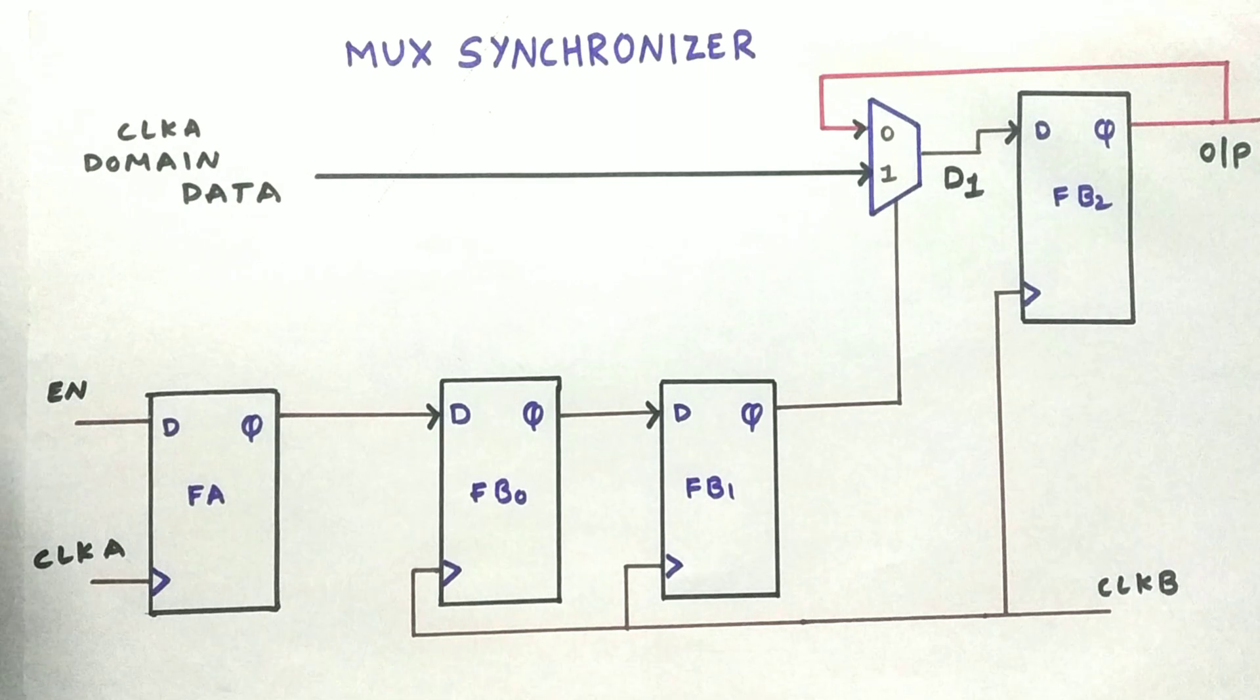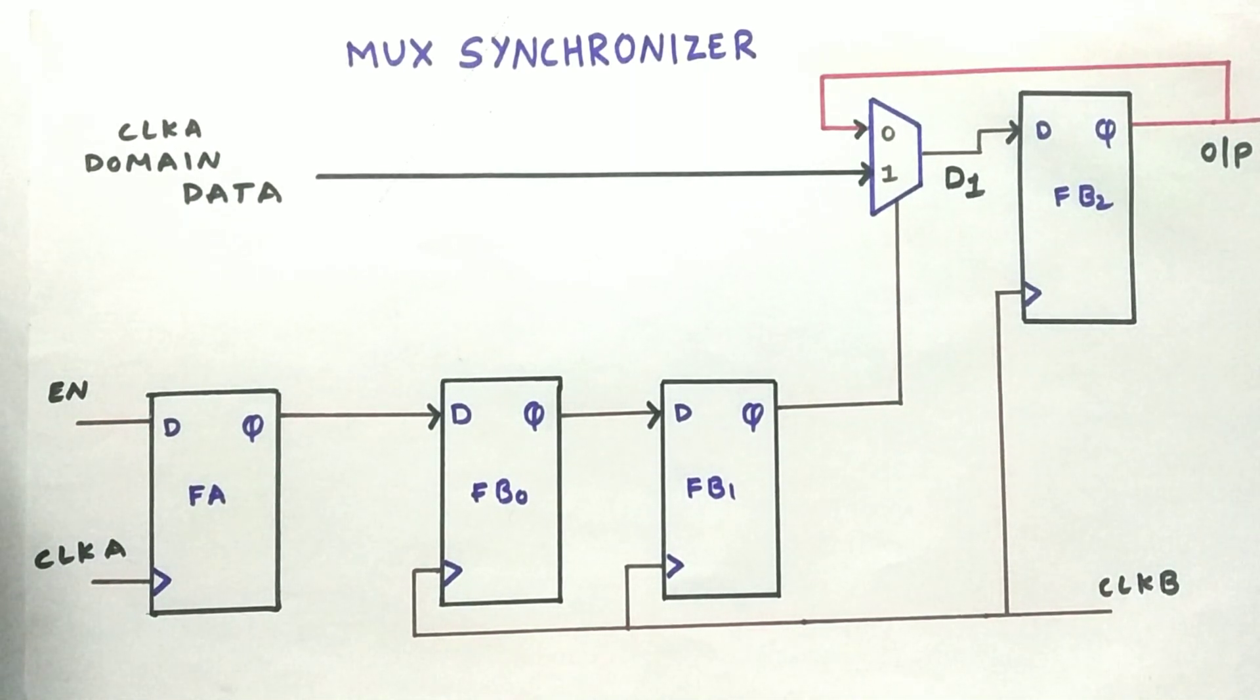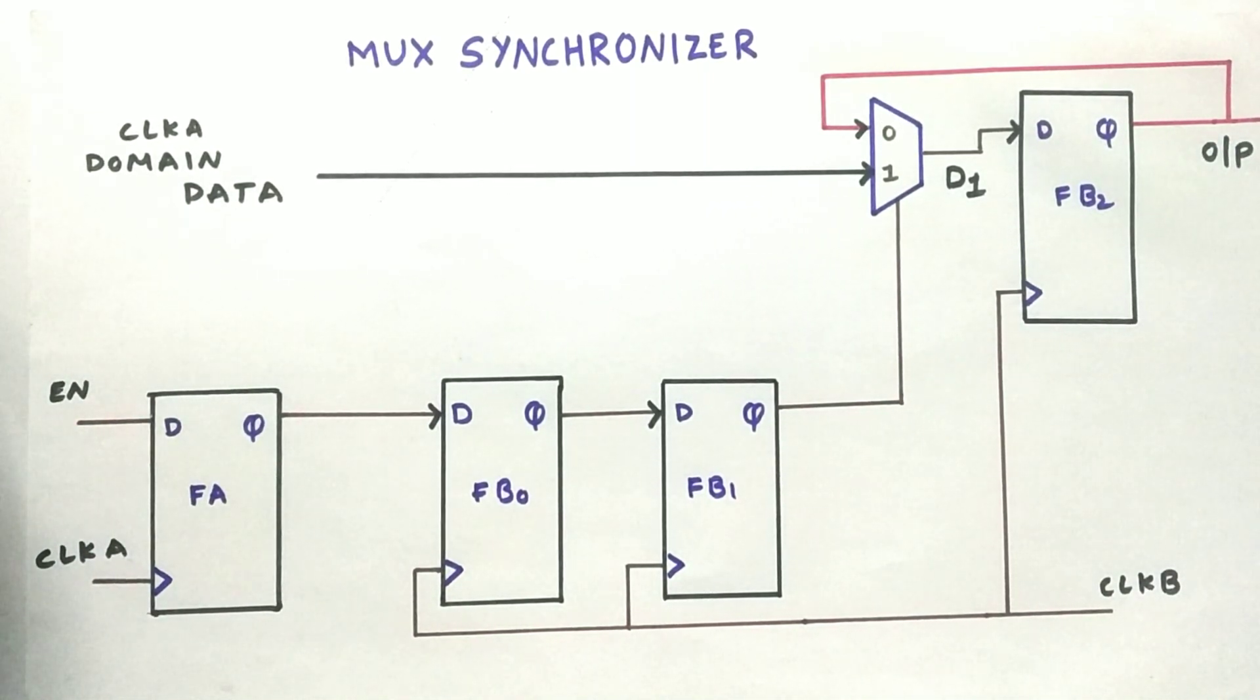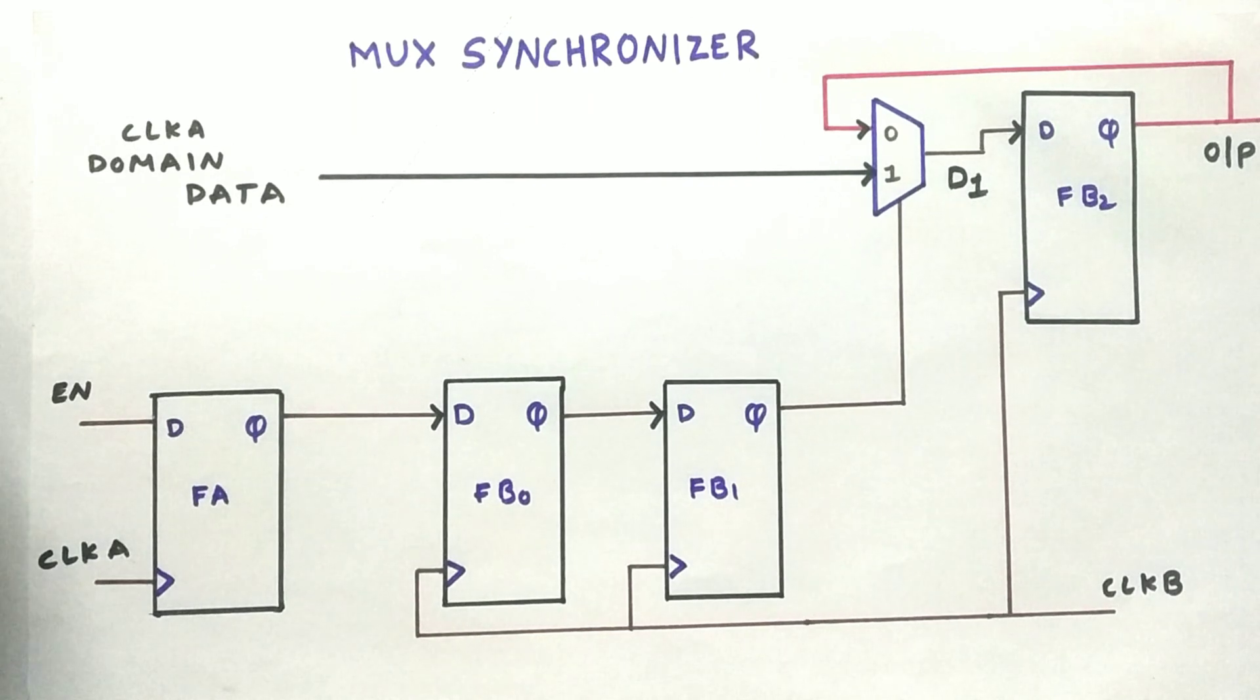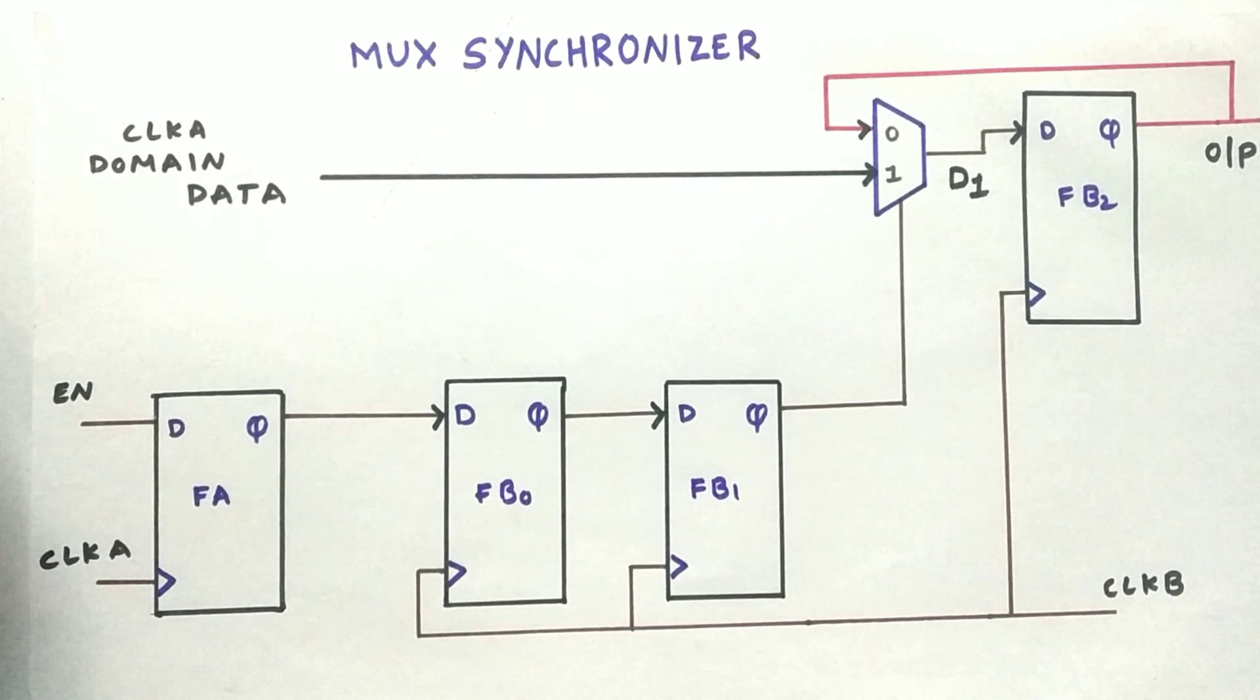Now coming to MUX synchronizer. Why are we using a MUX synchronizer when we have a two-flop synchronizer to synchronize from clock domain A to clock domain B? So why are we not going with the two-flop synchronizer?